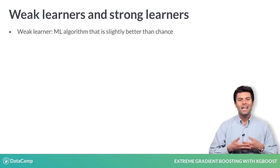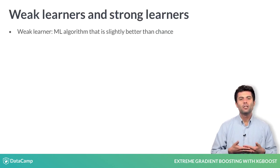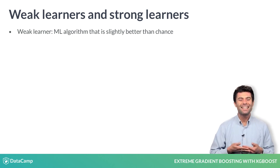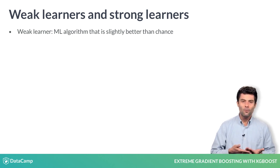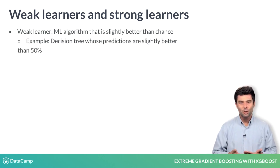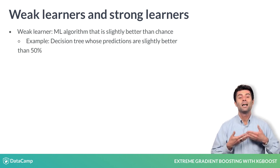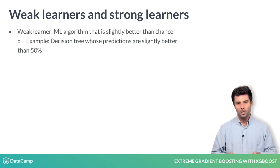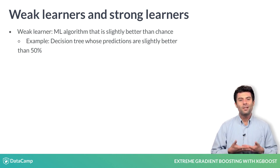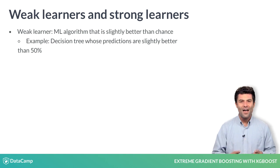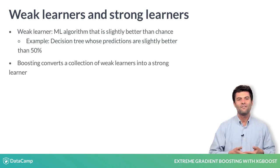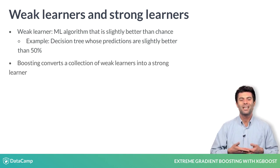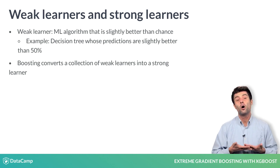A weak learner is any machine learning algorithm that is just slightly better than chance. So, a decision tree that can predict some outcome slightly more frequently than pure randomness would be considered a weak learner. The principal insight that allows XGBoost to work is the fact that you can use boosting to convert a collection of weak learners into a strong learner.